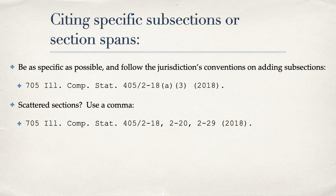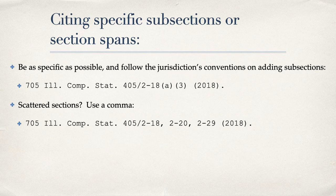Just as we indicated scattered pages in a case cite, we indicate scattered sections in a statute by separating the sections with a comma. This cite would call the reader to look at sections 2-18, 2-20, and 2-29 in the Juvenile Court Act.